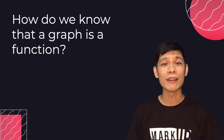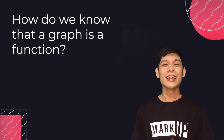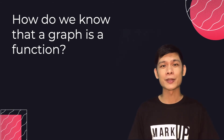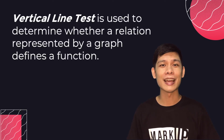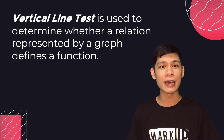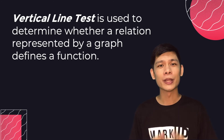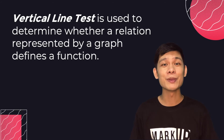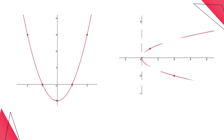How do we know if a given graph represents a function? In order to know if a given graph represents a function, we have to use the vertical line test. A vertical line test is used to identify whether a relation represented by a graph defines a function. To apply the vertical line test, just draw a vertical line through the graph. If the line hits the graph only once, then it is a function. If it hits the graph more than once, it is not a function.